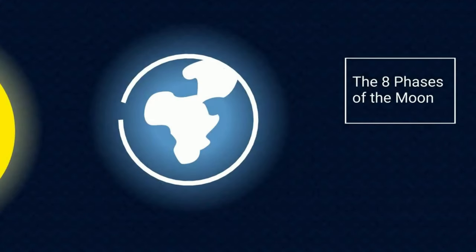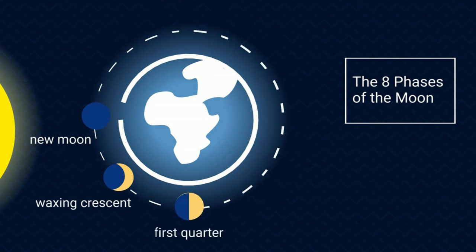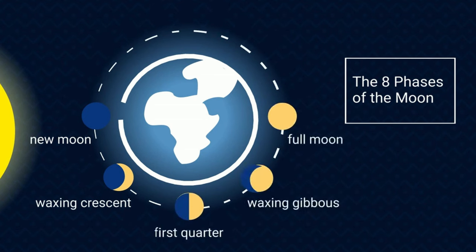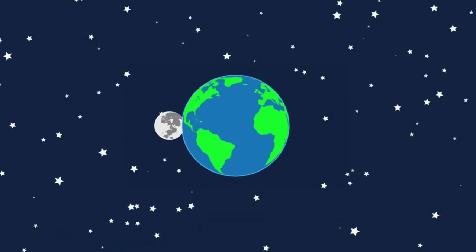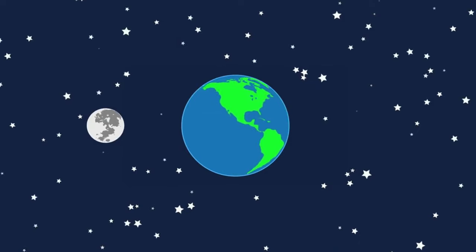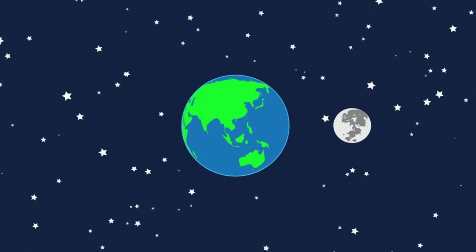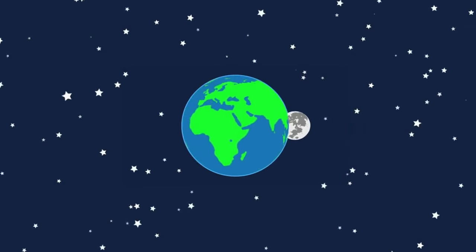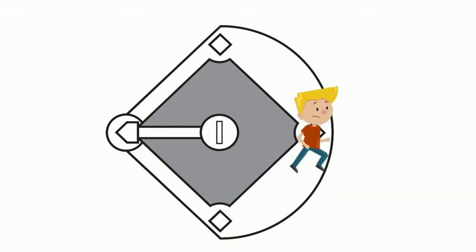The eight phases are New Moon, Waxing Crescent, First Quarter, Waxing Gibbous, Full Moon, Waning Gibbous, Third Quarter, Waning Crescent, and then you are back at New Moon. The Moon revolves around the Earth in a counterclockwise direction. An easy way to remember counterclockwise is to think about running the bases during a baseball game — you run in a counterclockwise direction.